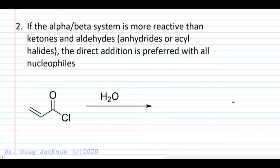Another note here, in addition to hard nucleophiles, if the alpha-beta system is more reactive than a ketone or aldehyde, in other words, it's an anhydride or acyl halide, carboxylic acid derivative, the addition product to the direct 1,2 position is going to be preferred in all cases because you've got a good leaving group.